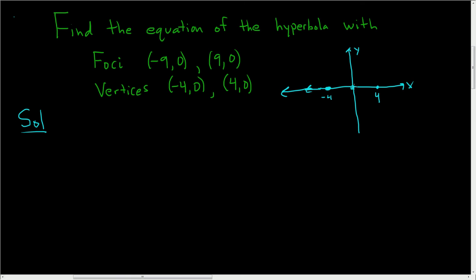That means the center is 0, 0 because it's right in the middle. So the center is 0, 0. And the vertices lie on the hyperbola. That means the hyperbola must open left and right. So it looks like this.